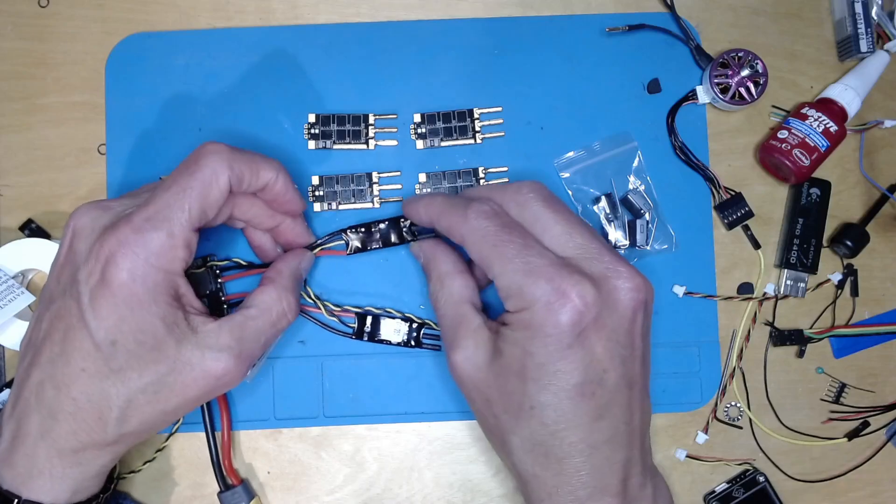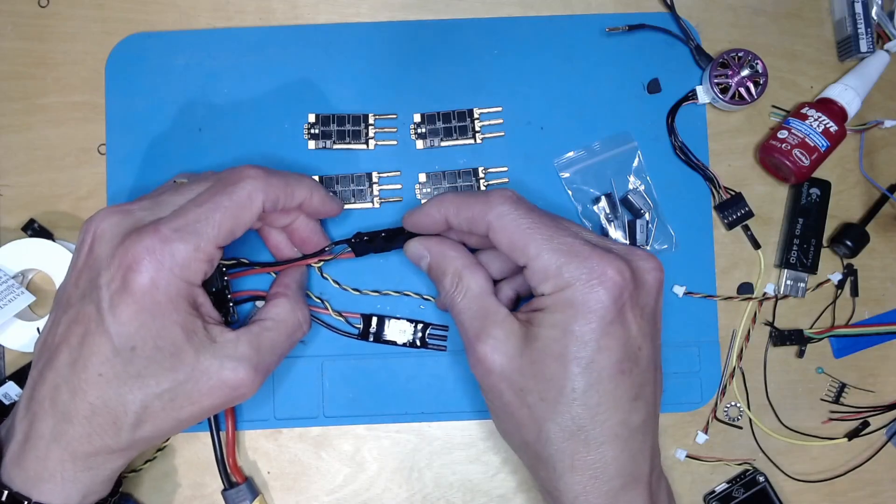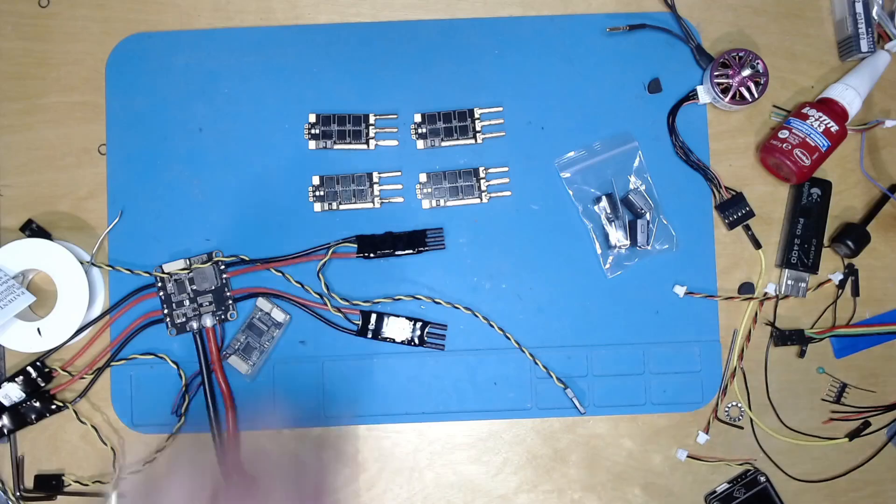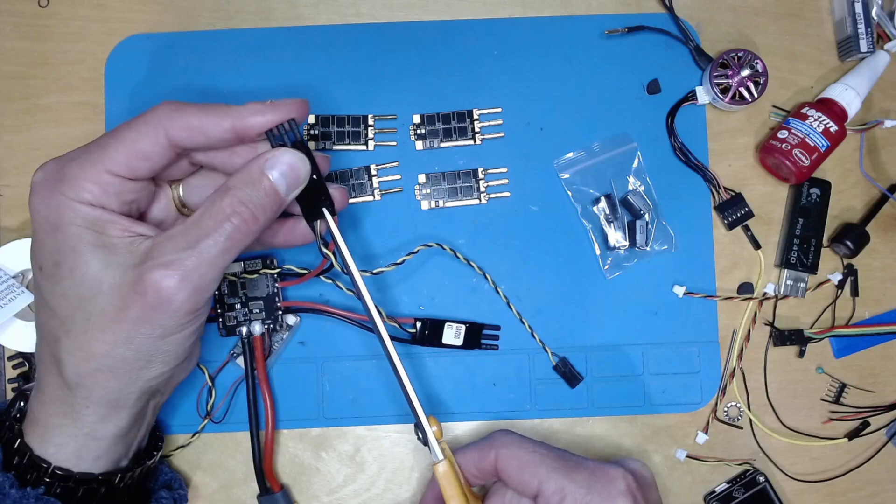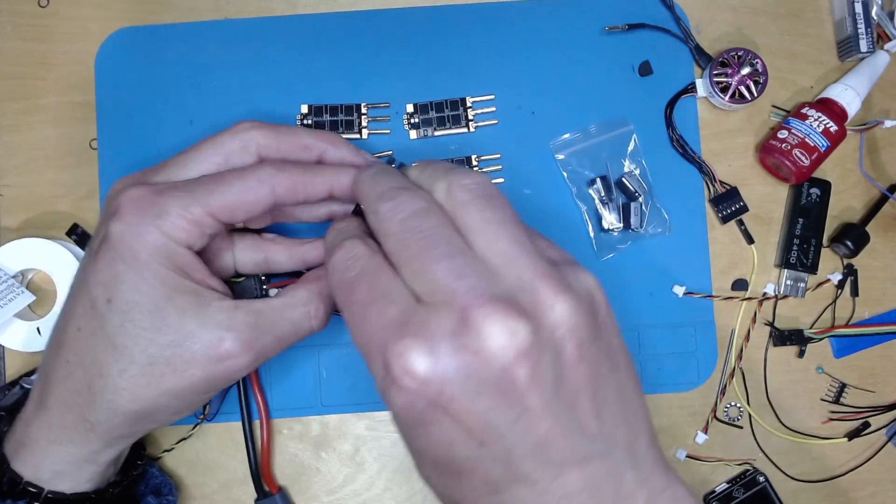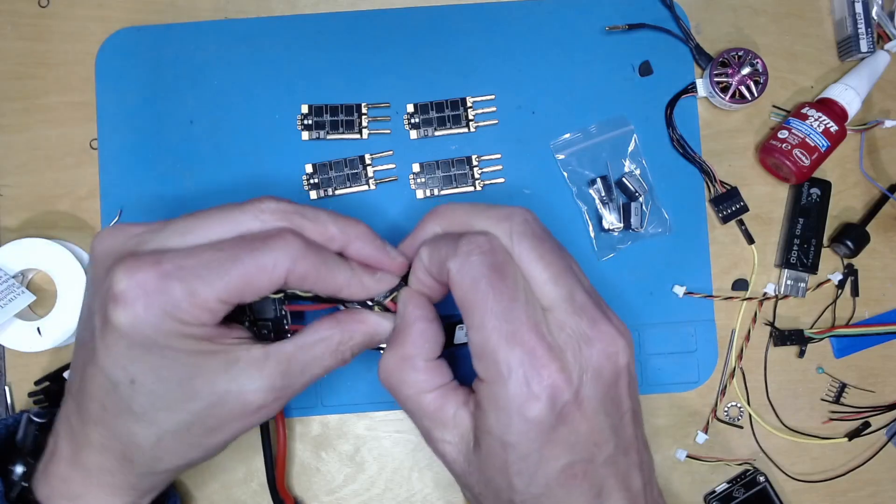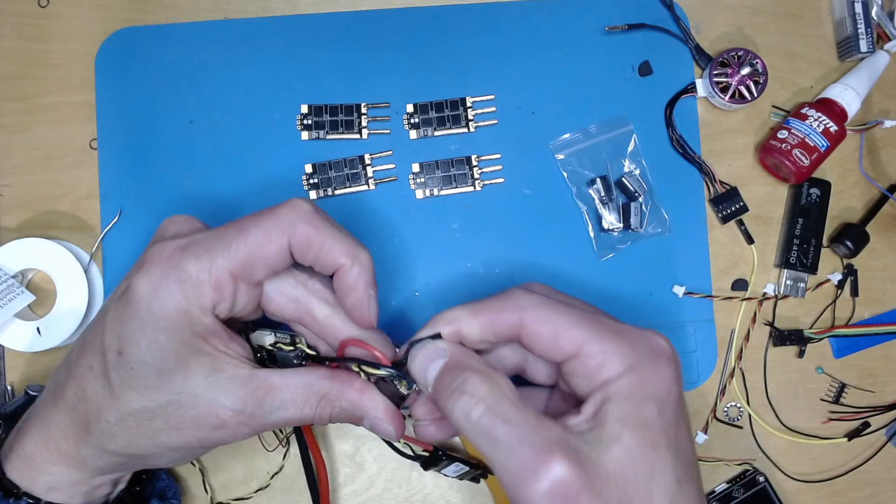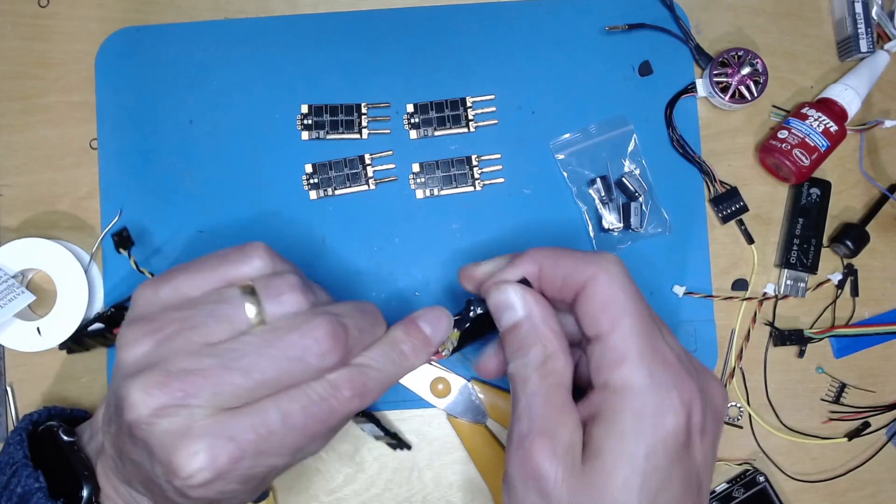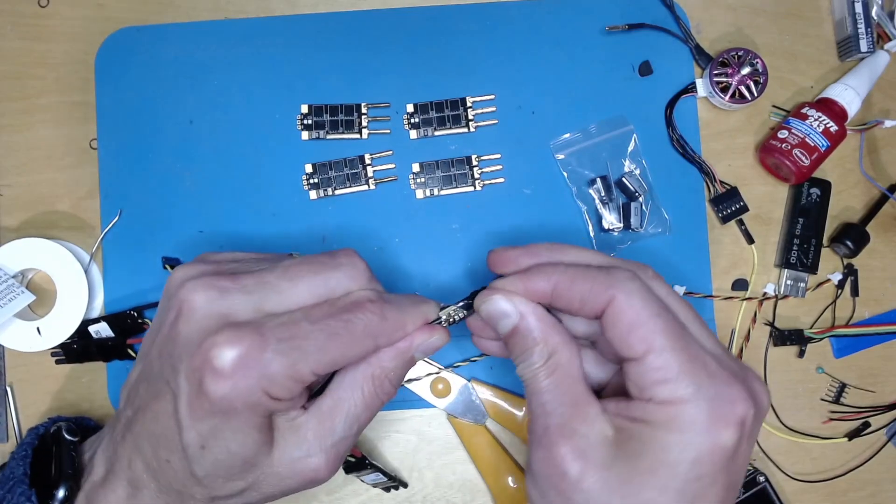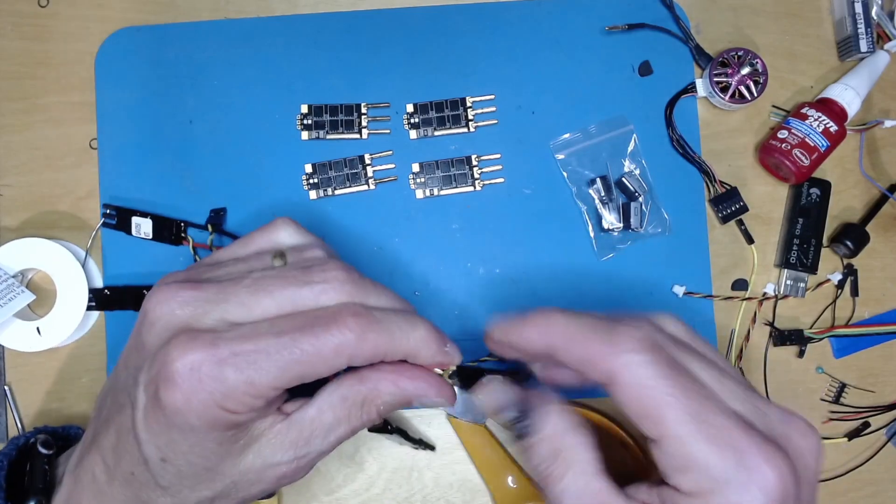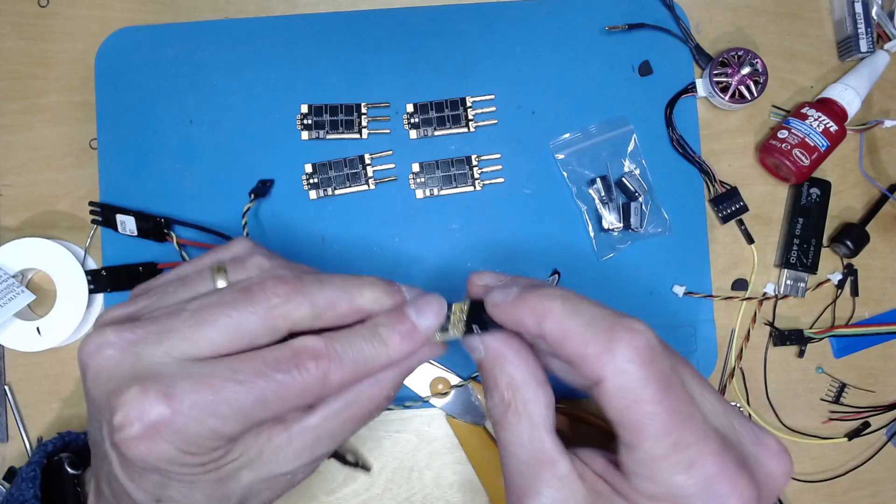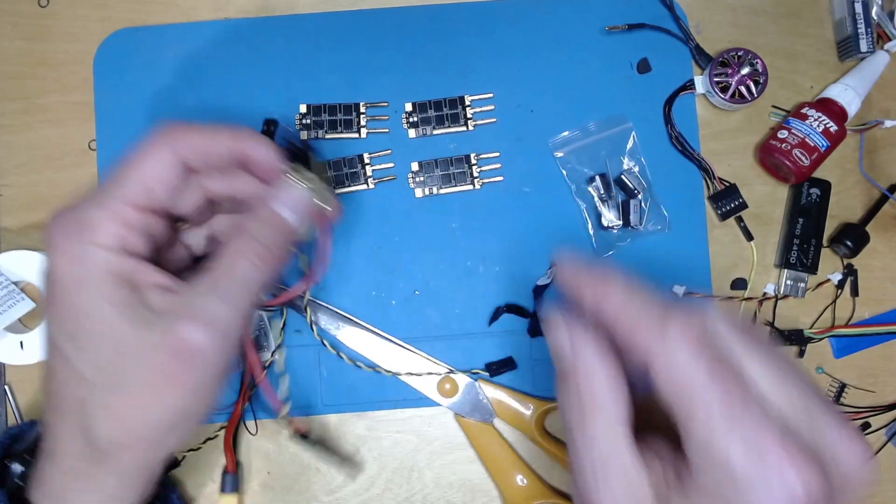So those are all the bullet connectors. I will put some heat shrink on - actually maybe I don't even need to put the heat shrink over. So what I'm going to do is cut open these so that I can desolder the wires. Get some scissors here, see what's under here. I'll pull the whole thing off just so you can see it.